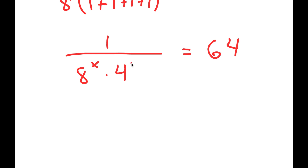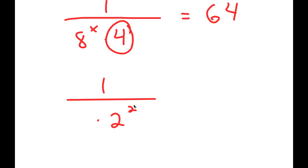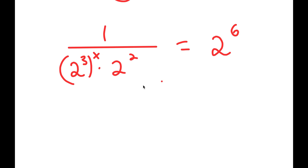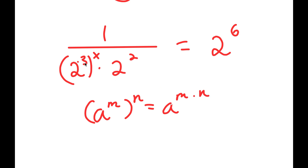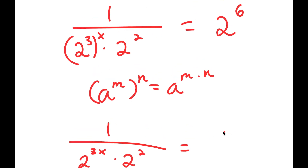I'm going to rewrite all these terms as powers of 2. So 4 is equal to 2 squared, and 8 is the same thing as 2 to the power of 3, so I have 2 to the power of 3 to the power of x. And 64 is the same thing as 2 to the power of 6. Now if I have something in the form a to the power of m to the power of n, this equals a to the power of m times n. So 2 to the power of 3 to the power of x equals 2 to the power of 3x, and I have this times 2 squared is equal to 2 to the power of 6.